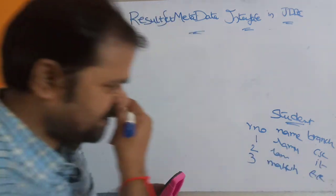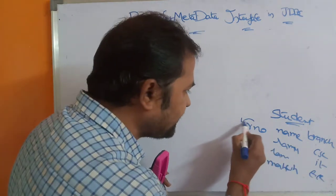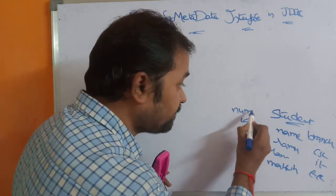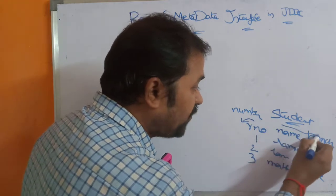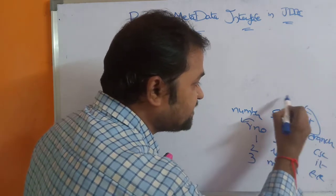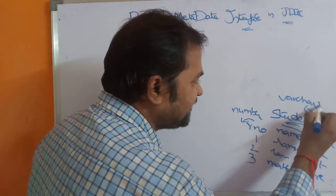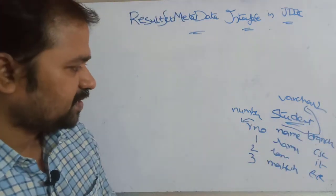The type of the role number column is NUMBER — it stores numbers. The type of name and branch columns is VARCHAR2. VARCHAR2 means it is a string type in Oracle.